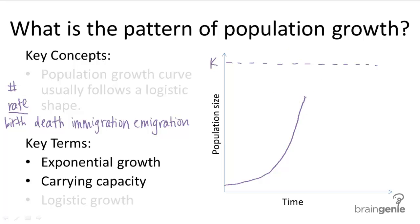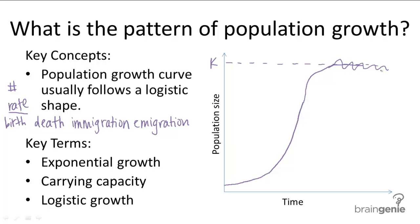As a population continues to grow, it will begin to slow down and then plateau at this carrying capacity. Obviously it's not exactly flat — it will go up and down around the carrying capacity in fluctuations — but in general it will stay around the vicinity of the carrying capacity. This new model, in its S shape, is called logistic growth, and it is the simplified growth pattern of most populations.